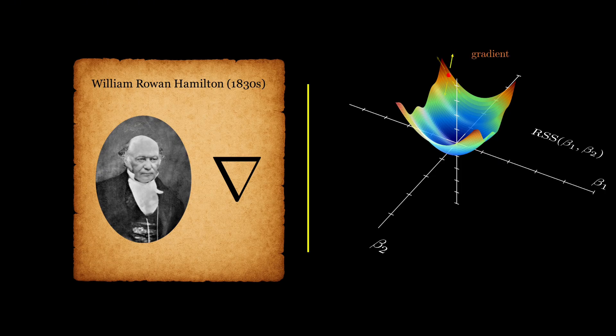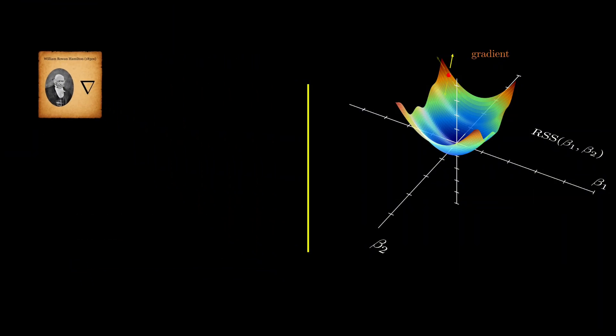The gradient of a scalar-valued function f of beta, where beta is a vector of parameters, is a vector that points in the direction of steepest increase of f. Mathematically, it can be shown as the following.